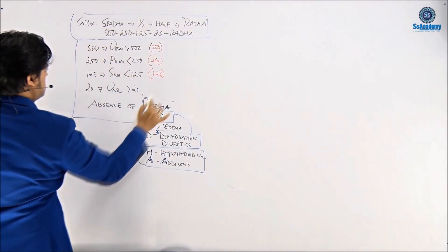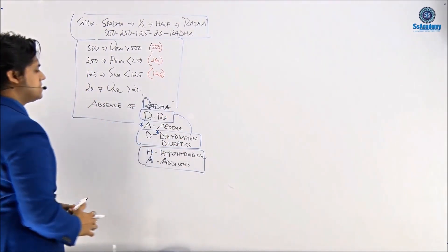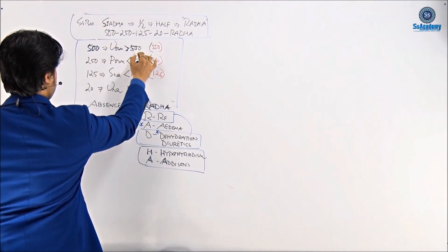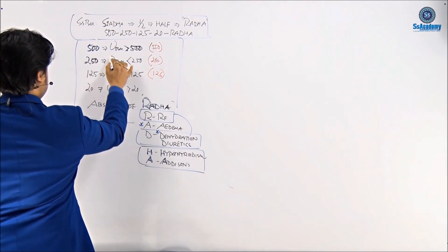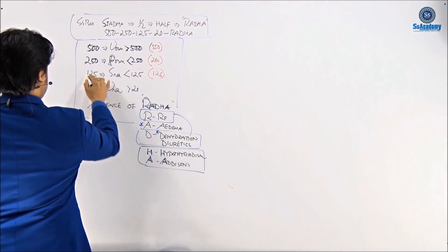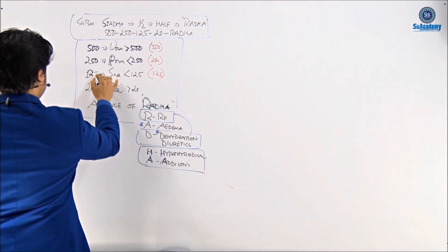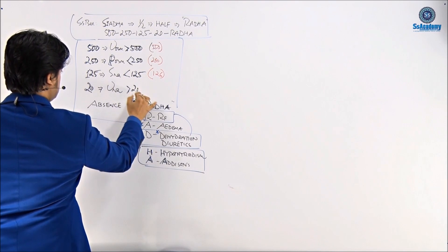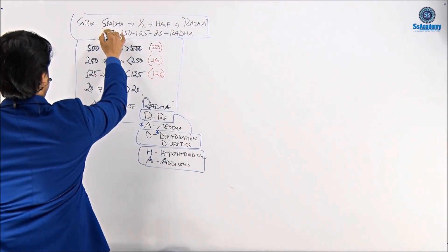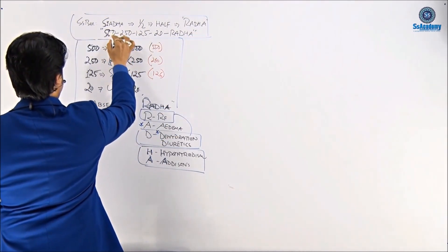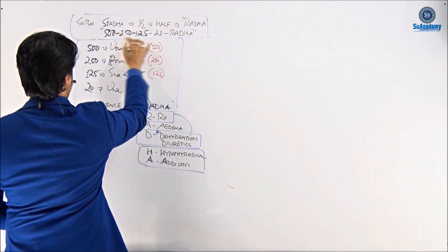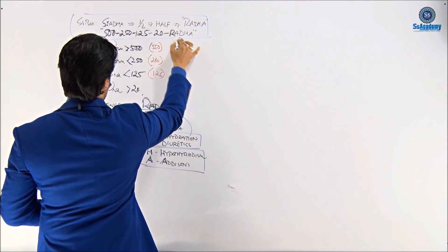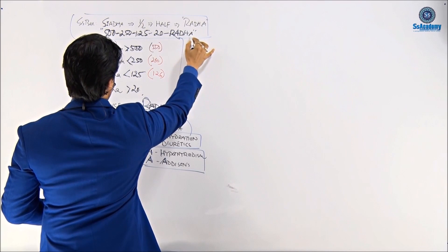So this is the diagnostic criteria of SIADH. To summarize: 500 means urine osmolarity greater than 500; 250 means plasma osmolarity less than 250; 125 means serum sodium less than 125; 20 means urinary sodium more than 20. Half of 500 is 250, half of 250 is 125 — just these numericals to remember, plus 20 and RADHA.